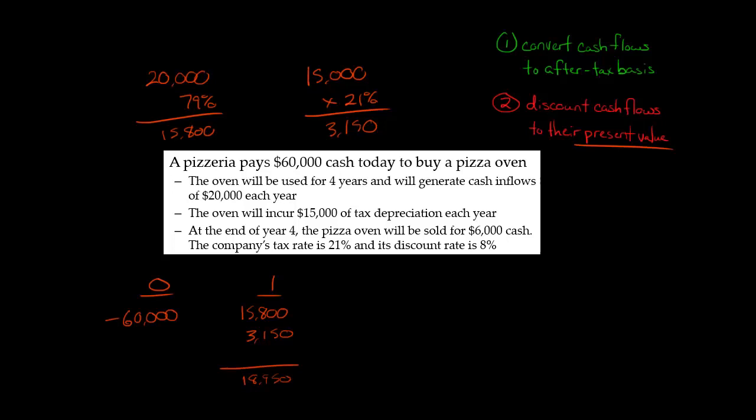So our cash flows on an after-tax basis for the very first period would have $18,950. Another way of getting that, if you wanted to, you could take $20,000 of income that we had, subtract the $15,000 deduction, the tax deduction of depreciation. Then $20,000 minus $15,000 would mean you'd have $5,000 of taxable income. You multiply that by 21%, that means you'll have to pay $1,050 in taxes in the first year. This would be a cash outflow for taxes. But you receive $20,000. So $20,000 minus the tax you pay of $1,050, that would also give you $18,950. So there's a couple different ways to do it. But I'm just going to continue with this way. We'll convert to the after-tax cash flows first.